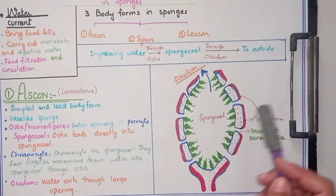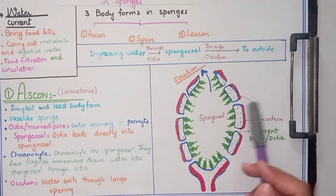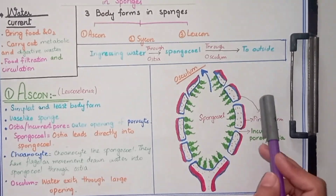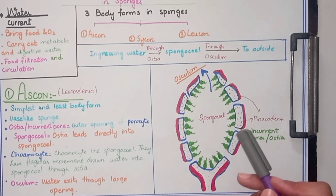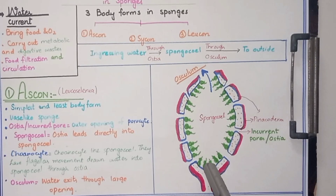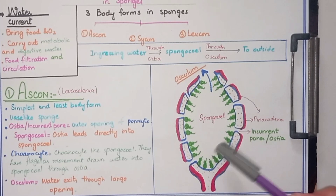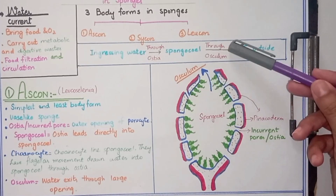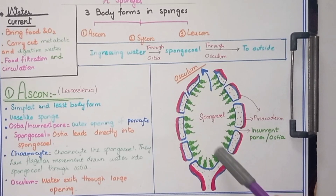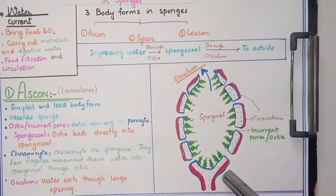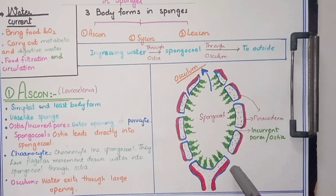When water moves horizontally, it enters the sponge and also brings food particles and oxygen with it. This food is very important for the sponge, as food provides energy to the organism. Inside the sponge cavity, digestive waste and metabolic waste are present, which are carried out along with water and released from the body — a process known as excretion. Due to the water current, organisms intake nutrients and perform food circulation, food filtration, and excretion.